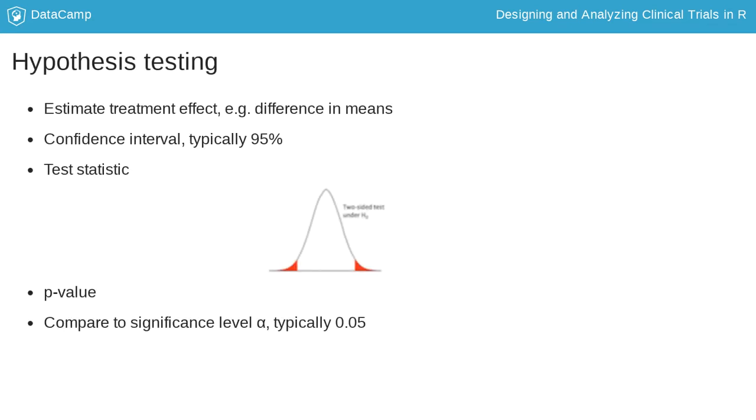If this p-value is less than a pre-specified significance level, then we reject the null hypothesis. Commonly, this is set to 0.05, i.e. we allow a 5% chance of incorrectly rejecting the null hypothesis when it is, in fact, true.